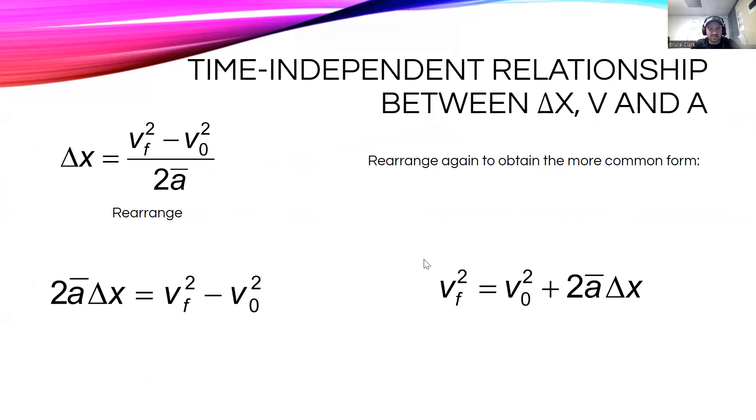All right, so time-independent relationship between the change in x, that's the distance, v, that's the velocity, and a, that's the acceleration. So if we know the distance an object is traveling, its starting and final velocities, we're going to be able to figure out the acceleration or some order of those things. So the formula that you should write down that you're going to be using all today is this one over here on the right.